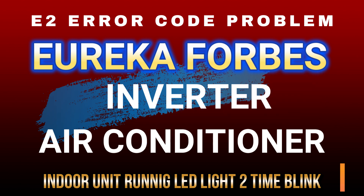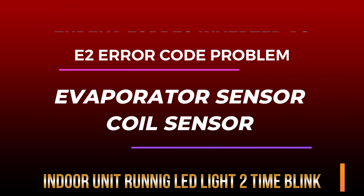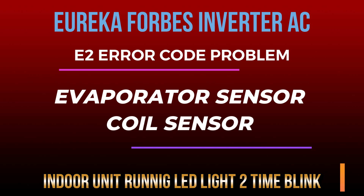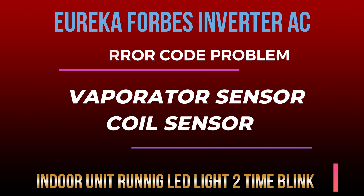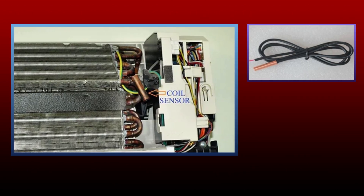If E2 error is coming in your Eureka Forbes AC and the running light of the indoor unit is blinking two times, then this is the error of the evaporator sensor — in simple words, it can be called the coil sensor. This sensor is installed in the coil of the indoor unit.